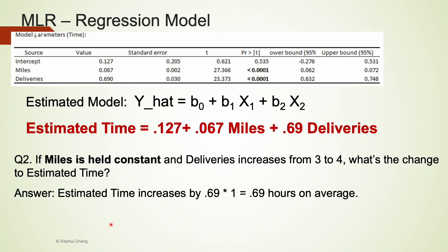Question 2: If miles is held constant and deliveries increases from 3 to 4, what's the change in estimated time? In this question, we fix miles and only increase deliveries from 3 to 4. That's actually one unit increase. So the estimated change in time should be 0.69 hours on average.